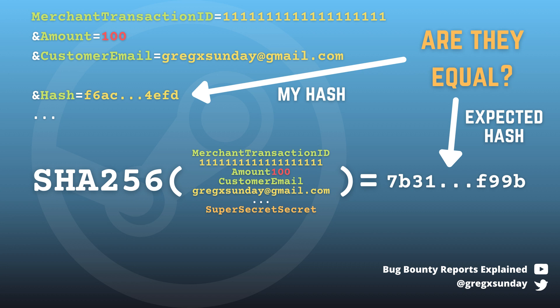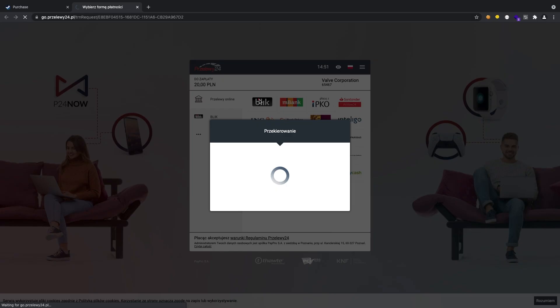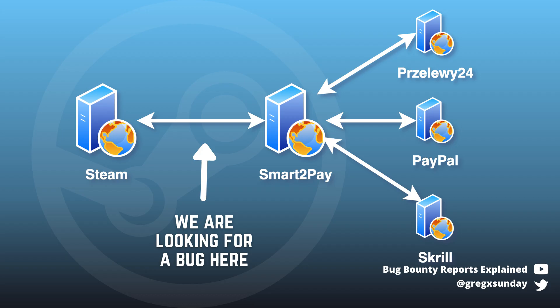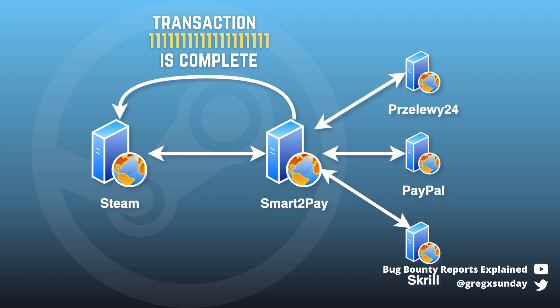If the hash is valid, Smart2Pay communicates with the chosen payment provider and the transaction is finalized. In the case of this bug we don't really care about integrations between Smart2Pay and payment providers, but rather between Steam and Smart2Pay. After the transaction is completed, no data is sent to Steam on the client side. What happens on the backend is that Smart2Pay sends information to Steam that the transaction with a specific ID was completed — this can be done for example using a webhook. Then Steam looks into its database for this transaction, adds funds to the proper user, and marks the transaction as complete.